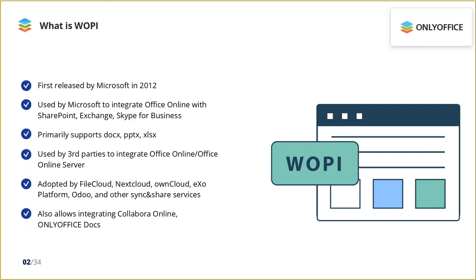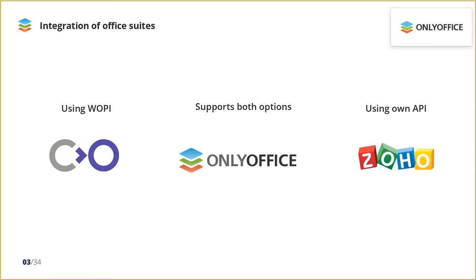Office apps can be implemented in several ways — not only using WOPI. For example, Collabora uses WOPI, but solutions like Zoho use their own API methods, embedding the editor in iframes with postMessage APIs for communication between the web app and the iframe. OnlyOffice supports both options, and I will explain the difference between them a bit later.